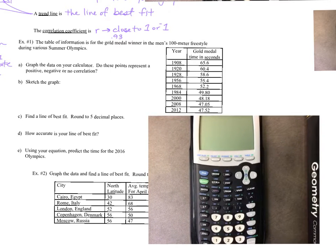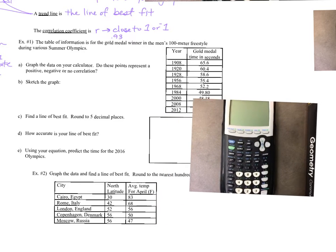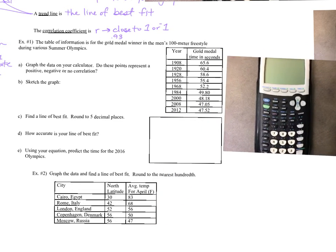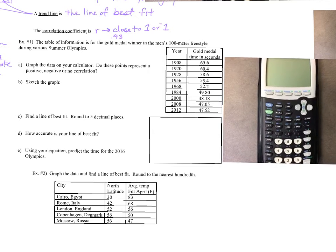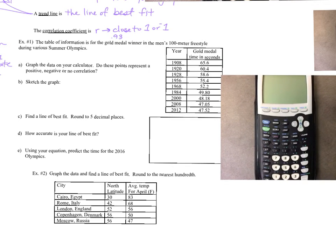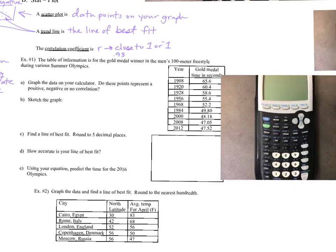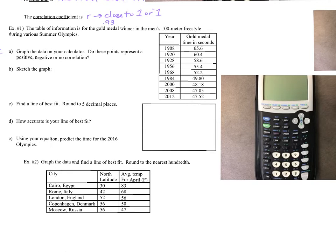This problem says the table of information is for the gold medal winners in the men's 100 meter freestyle during various Summer Olympics. We're considering the year as our x-value — we'll call it L1 — and the swim time as our y-value, which will be L2, list one and list two. The first question asks us to graph this on our calculator.